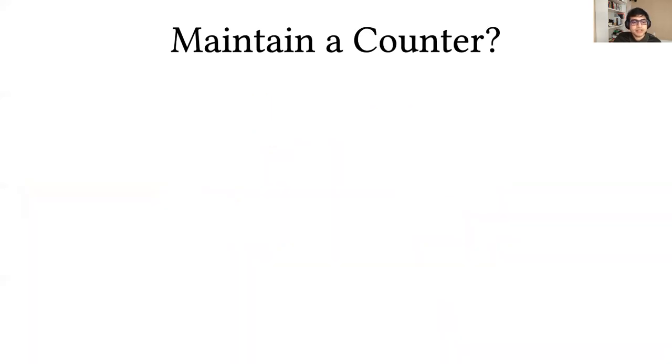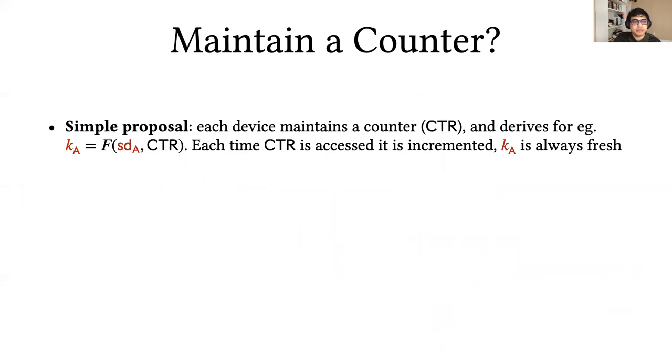Instead of evaluating the PRF on the message, let's try a different approach. We could try maintaining a counter and deriving the instance key by applying the PRF on the seed sampled earlier and the counter. Each time the counter is accessed, it is also incremented. This ensures that the instance keys that come out of this method are always fresh.